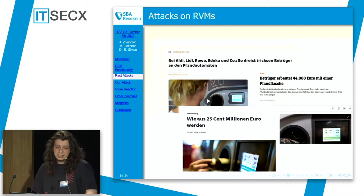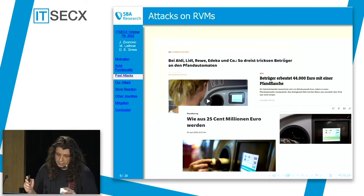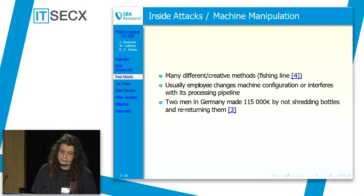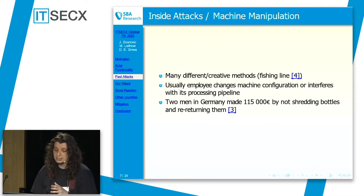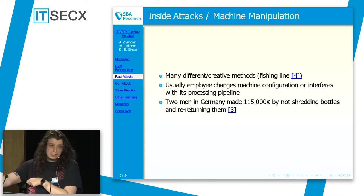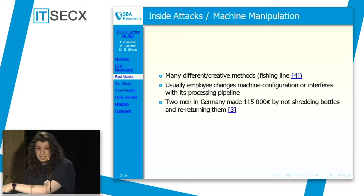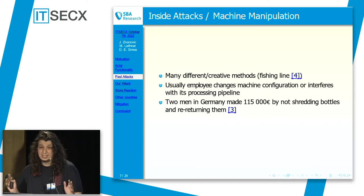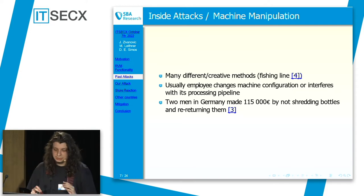What attacks have already been performed against these machines? I categorized them into different categories. First, we have inside attacks or machine manipulation — generally the category where you find the most creative methods for scamming these machines. For example, there was a person using a fishing line attached to a bottle, putting it into the machine, waiting for it to be accepted, then pulling it out and doing that again. According to an article, he made like 20,000 euros, which shows commitment to the scam.